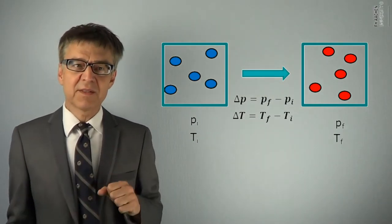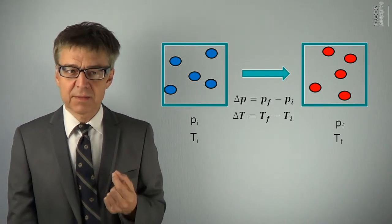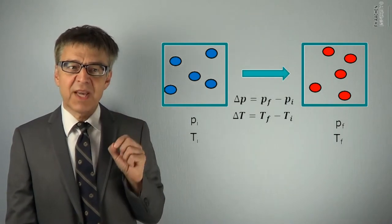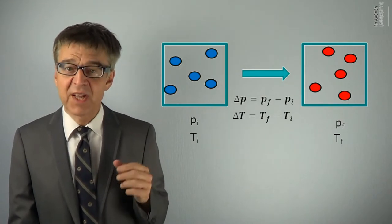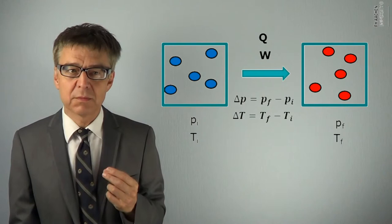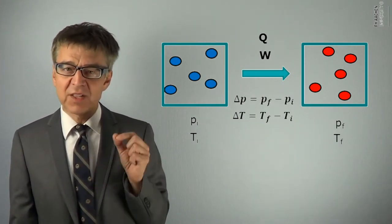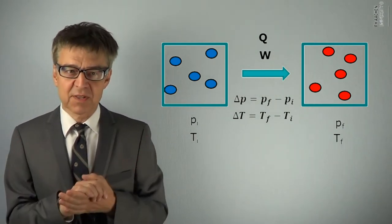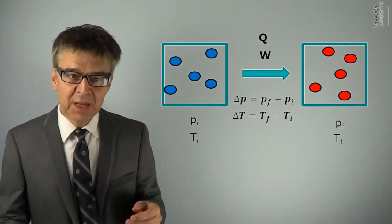To completely describe a process requires not only to indicate the deltas, the changes of state variables, but also the indication of energy transfer variables, the so-called process variables, heat q and work w. It's important to point out that heat and work are not state variables. Heat and work are not properties of a system.